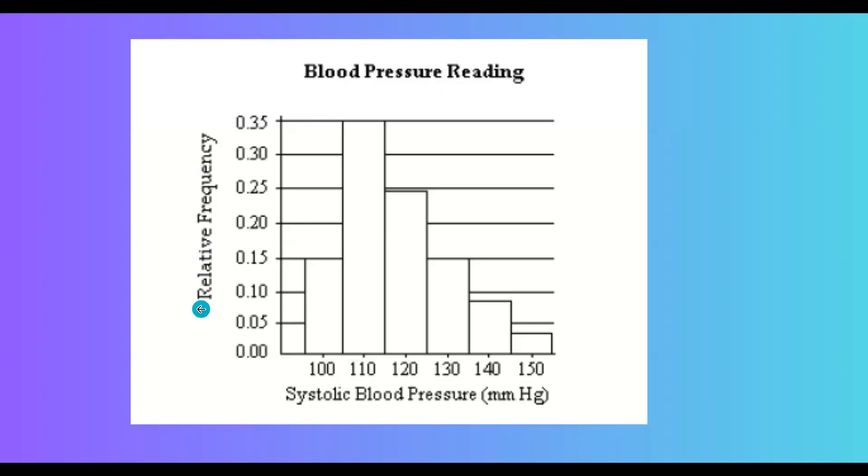Let's take a look at the relative frequency for this histogram. As you can see, you have 1, 2, 3, 4, 5, and 6 bars, where you basically have 6 classes.